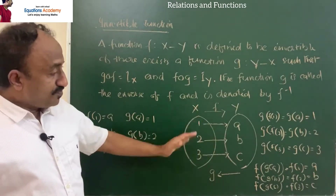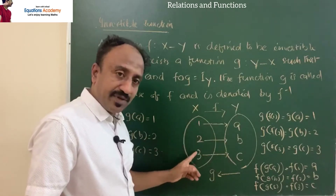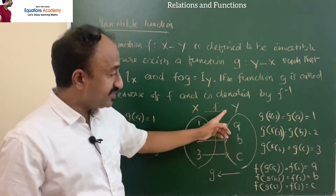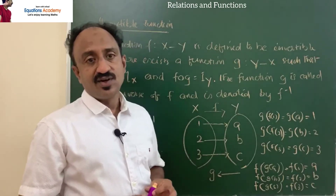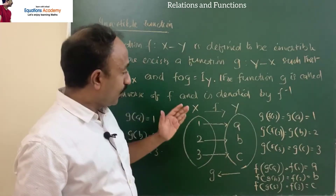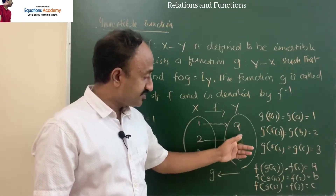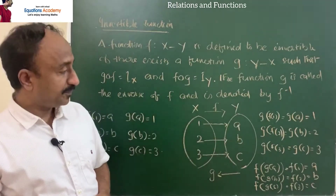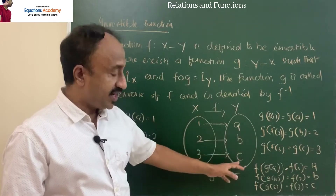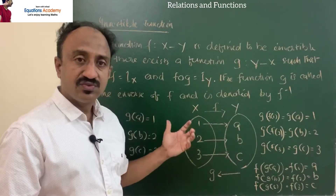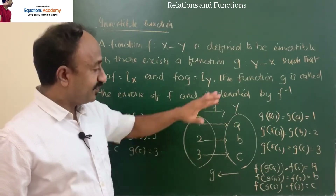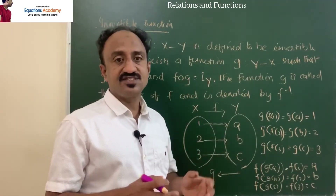Now if we observe, all the elements in X have distinct images in Y, so we say this is a one-one function. And all the elements of Y are images of X, so it is an onto function. This function is one-one and onto, meaning it is a bijective function.